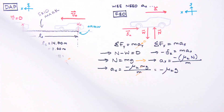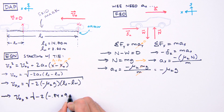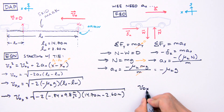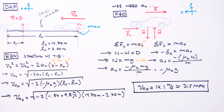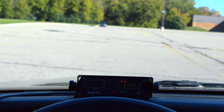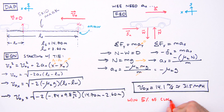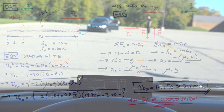Now we can solve for the car's initial speed. Inserting our values into the equation: v sub o sub x equals the square root of negative 2 times negative 0.84 times 9.8 meters per second squared times the quantity 14.70 meters minus 2.60 meters. That gives us 14.1 meters per second, or about 31.5 miles per hour, for the velocity of the car entering the skid. We asked the Farmington Hills Police Department to capture the car's speed with a radar gun, which read 30 miles per hour — meaning our measurements and calculations put us within 5% of the actual speed. I'm Jesse Mason, happy learning!